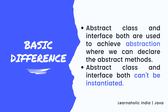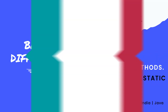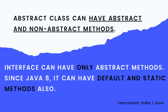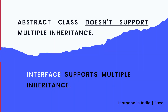Let's see each point one by one. First, abstract class can have abstract and non-abstract methods, whereas interface can have only abstract methods. Since Java 8, it can also have default and static methods. Second, abstract class doesn't support multiple inheritance, whereas interface supports multiple inheritance.